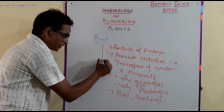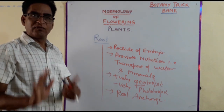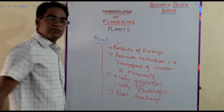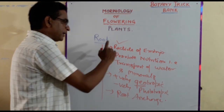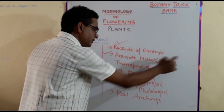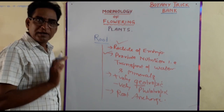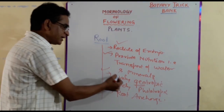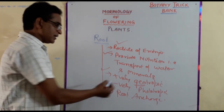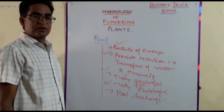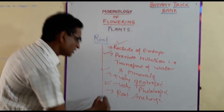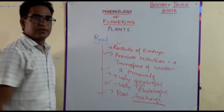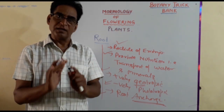These are some general points about roots to keep in mind. First, root originates from the radicle of the embryo. Second, it provides nutrition — that is, transport of water and minerals. Third, its nature is positively geotropic and negatively phototropic. It also anchors the plant, helping it stay fixed in the soil.